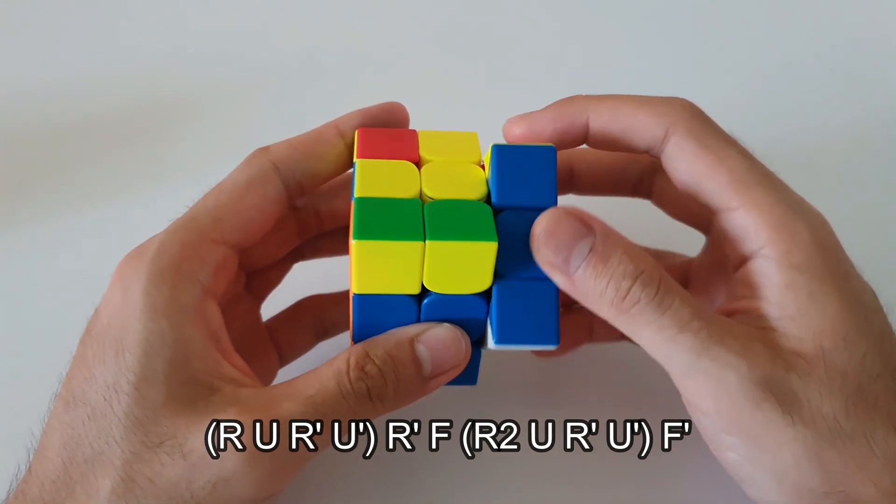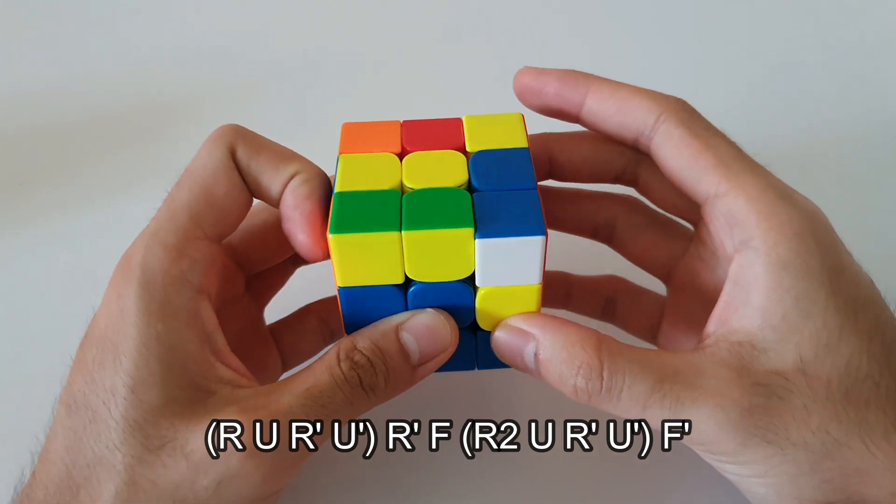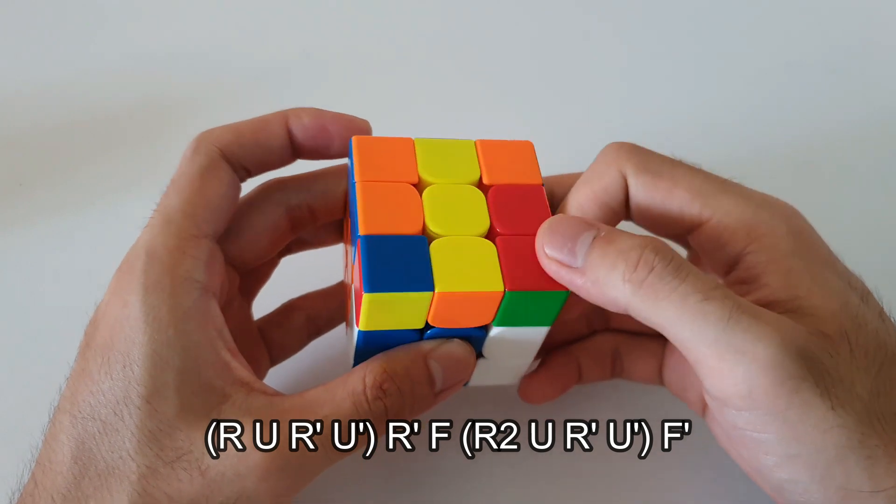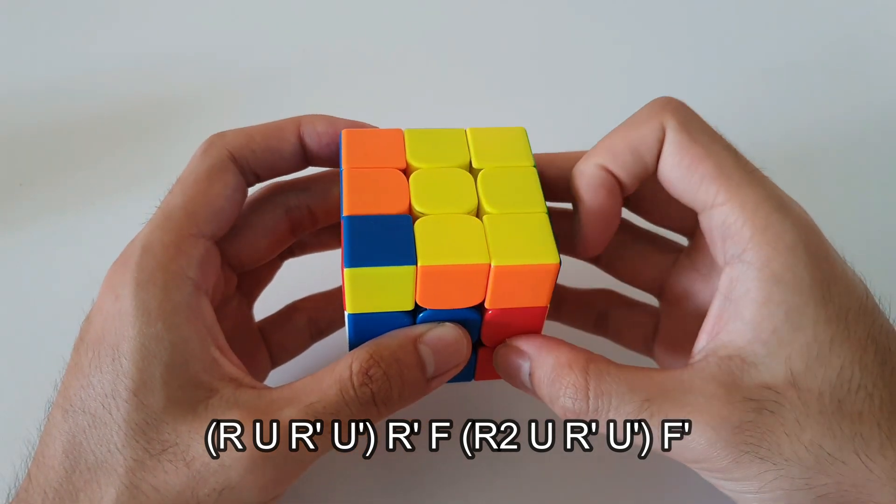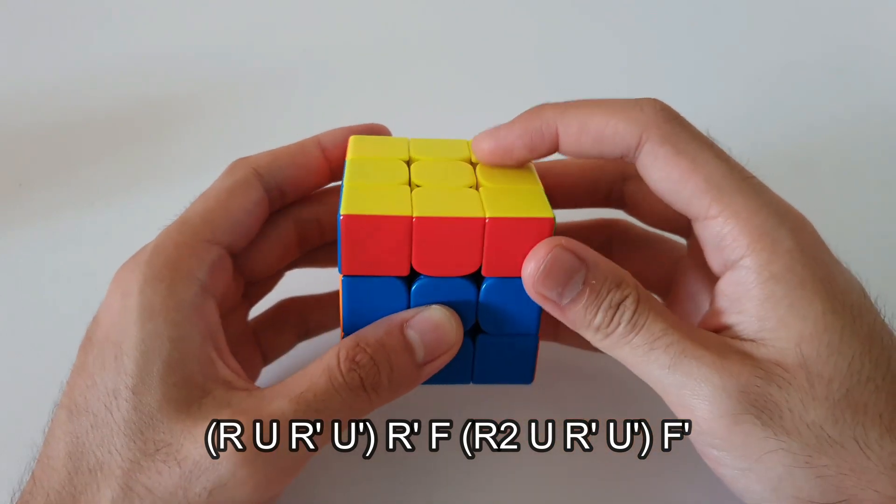So this algorithm actually looks quite similar to the start of a T-perm. It does end off differently, but the first few moves are very similar. So it starts off with a sexy move like this. Following that, you've got the R' F R2. Now you want to do a U, R' U', and then you finally end off with an F' like that.